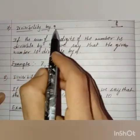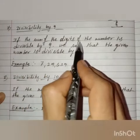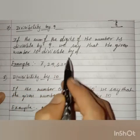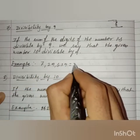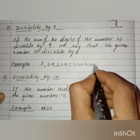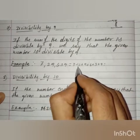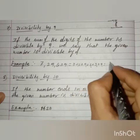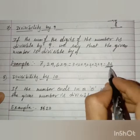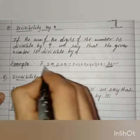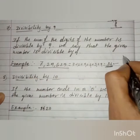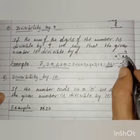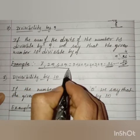The next rule is divisibility by 9. If the sum of the digits of the number is divisible by 9, we say that the given number is divisible by 9. Let us find the sum: 7 plus 2 plus 9 plus 6 plus 3 plus 9. So 7 plus 2 is 9, 9 plus 9 is 18, 18 plus 6 is 24, 24 plus 3 is 27, and 27 plus 9 is 36. The sum of the digits is 36. Since 36 is divisible by 9, the entire number is also divisible by 9. Got it, children?